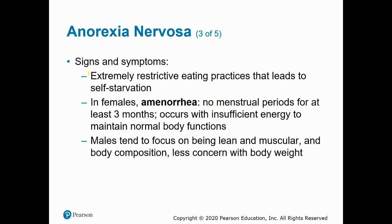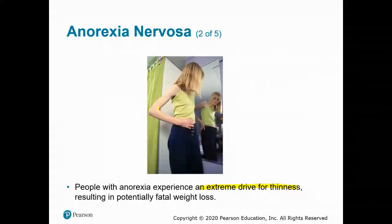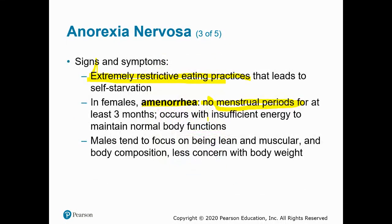Signs and symptoms of anorexia nervosa include extreme restrictive eating practices — perhaps the most obvious sign, though sometimes well hidden. In females, amenorrhea — no menstrual period for at least three months — is another indicator, along with extreme thinness. Males tend to focus more on being lean and muscular, concerned with body composition and percent fat mass relative to lean muscle mass, potentially less concerned with total body weight. The most obvious signs remain extreme restrictive eating practices, extreme thinness, and in females, amenorrhea.